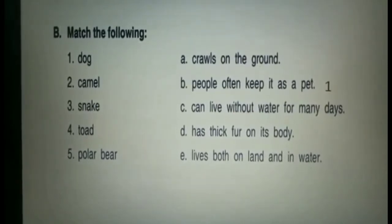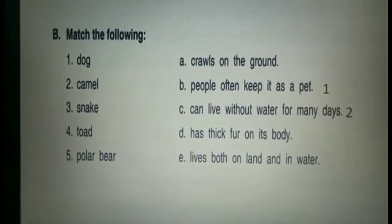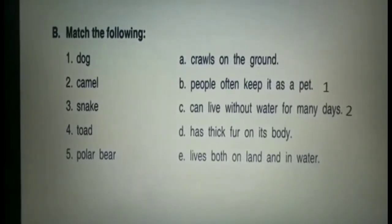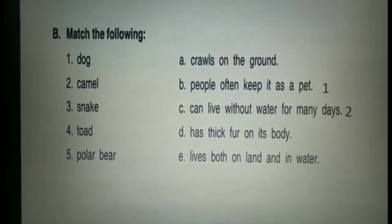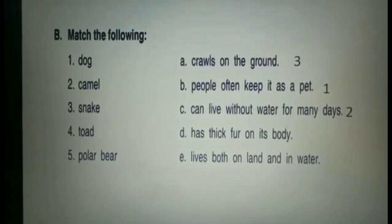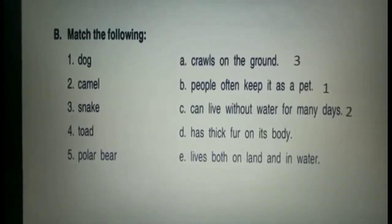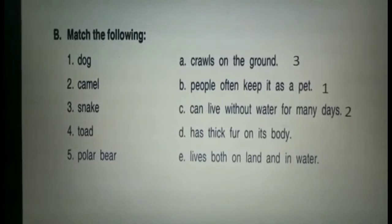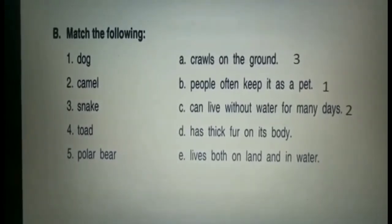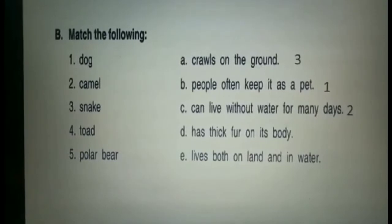Write 2 in front of option C. Next is snake — the answer is: crawls on the ground. Option A is the answer, so write 3 in front of A. Next is toad — the answer is: lives both on land and in water. Option E is the answer.